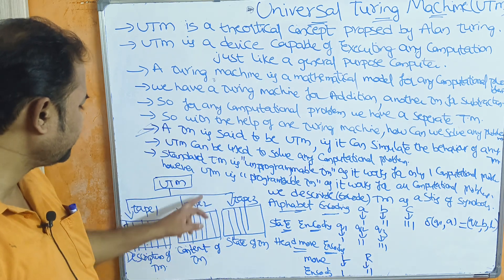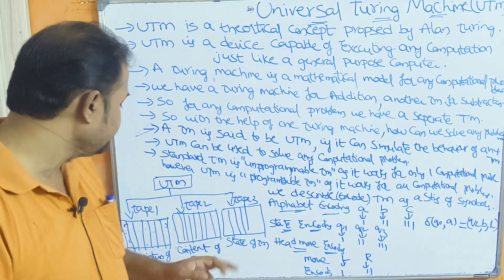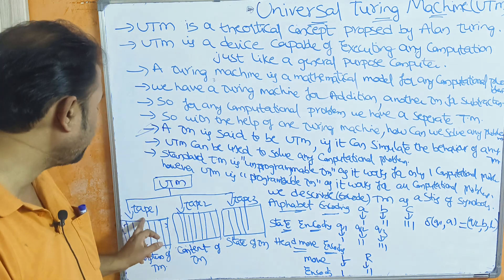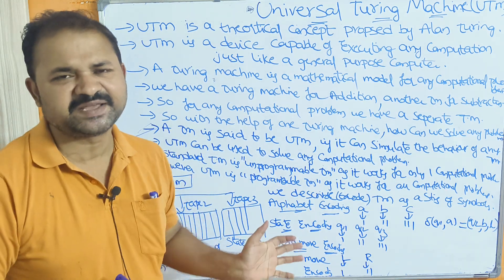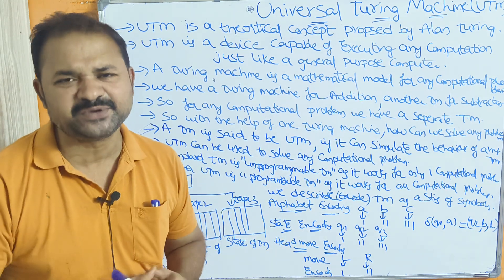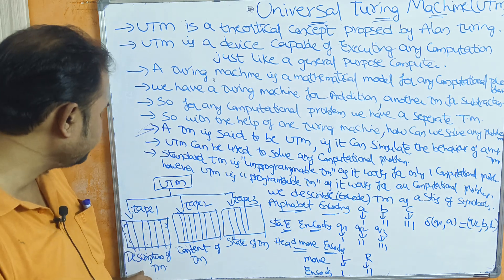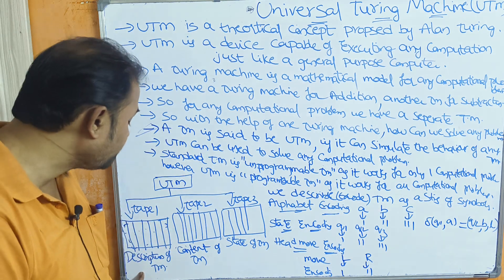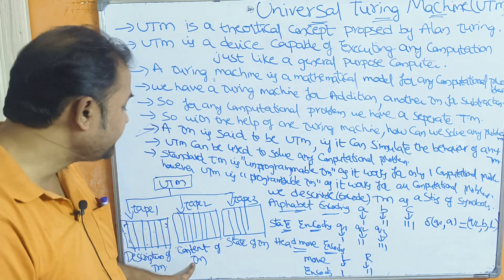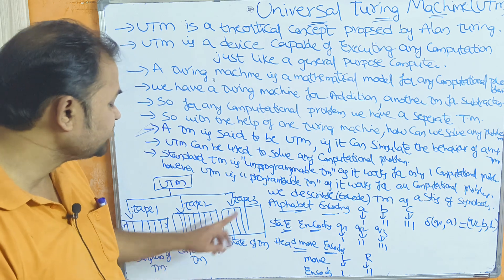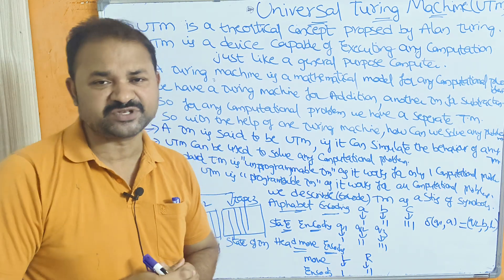Now let us see the diagram. Here we have the Universal Turing Machine, and instead of one tape we have three tapes — so this is a multi-tape Turing Machine. Tape 1 contains the description of the Turing Machine. Tape 2 contains the content of the Turing Machine. Tape 3 contains the state of the Turing Machine.